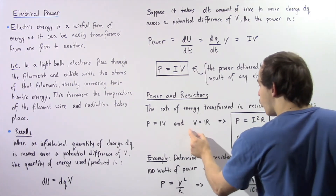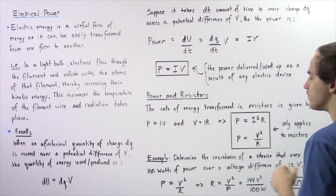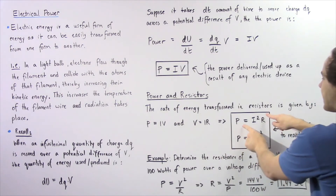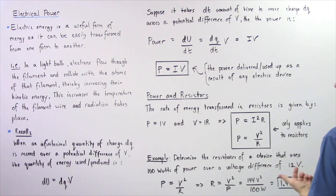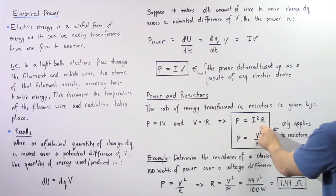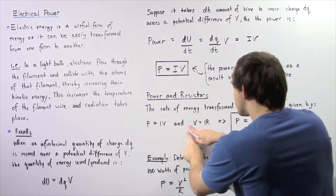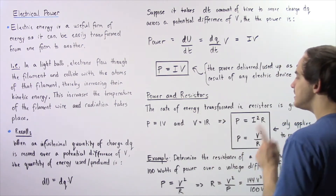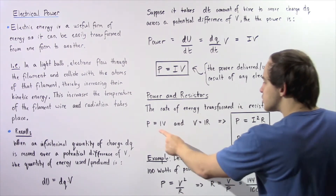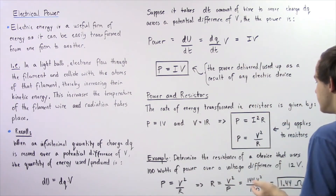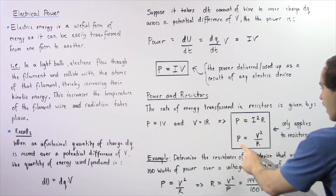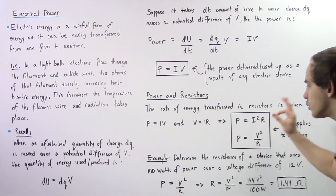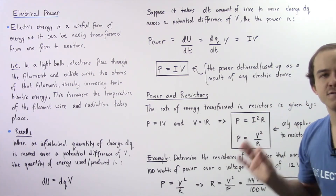Ohm's law tells us that voltage equals I multiplied by R. If we take P = IV and replace voltage with I times R, we get P = I²R. If we rearrange Ohm's law and solve for I, we get I equals voltage divided by resistance. Replacing I with V/R gives the second equation: P equals V² divided by R. These two equations apply only for resistors, while P = IV is the more general equation that applies to other devices such as batteries.